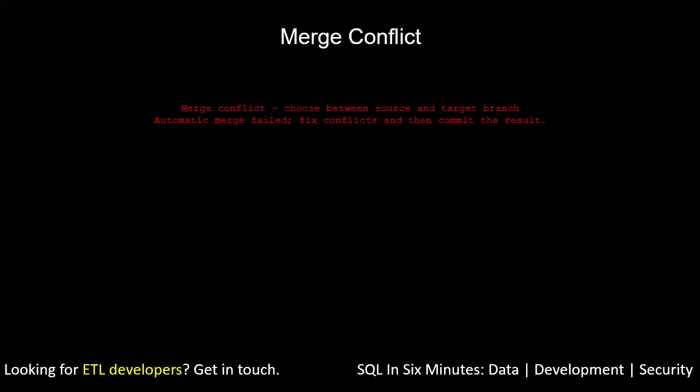In this video, we're going to be looking at merge conflict errors. Sometimes they differ — some can be like 'merge conflict, choose between the source and target branch.' Another one can be 'automatic merge fail, fix the conflicts, and then commit the result.' Basically, it's when we are trying to merge branches and we run into a conflict.